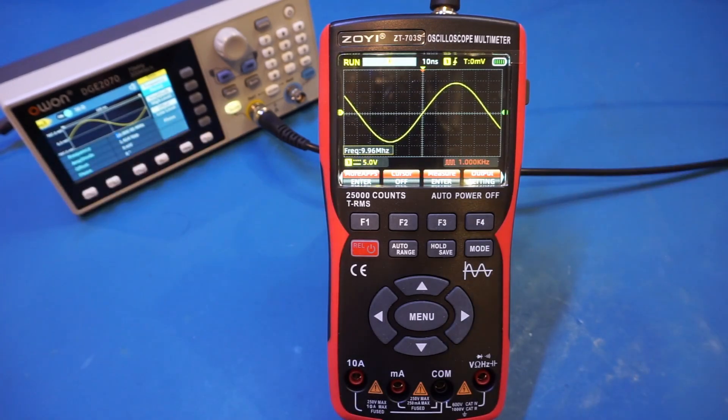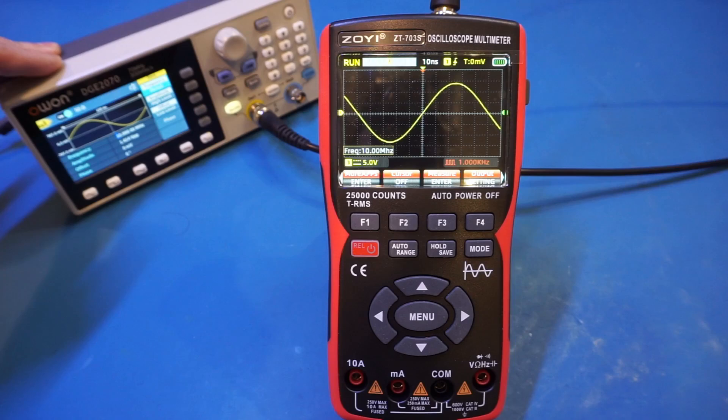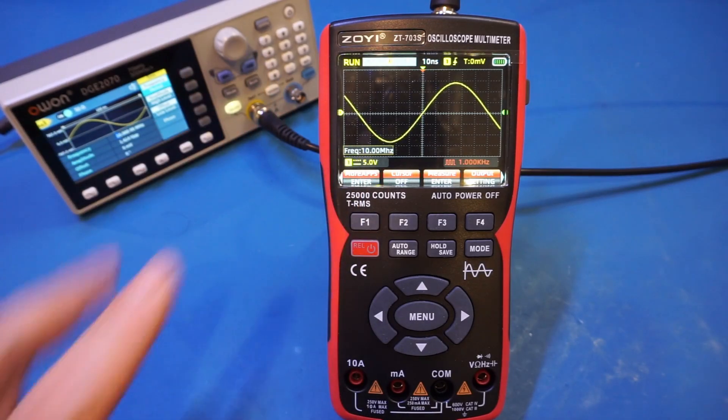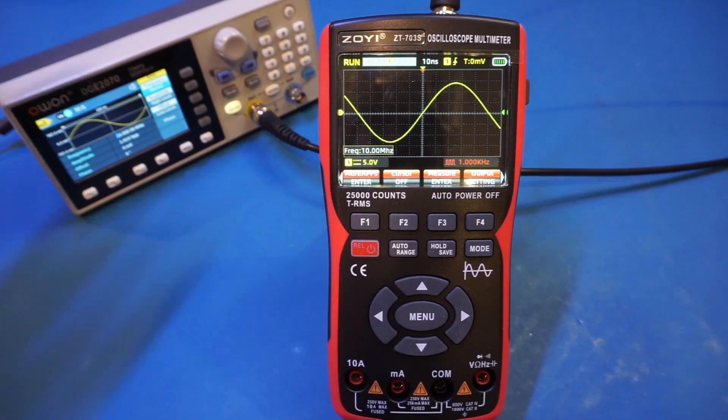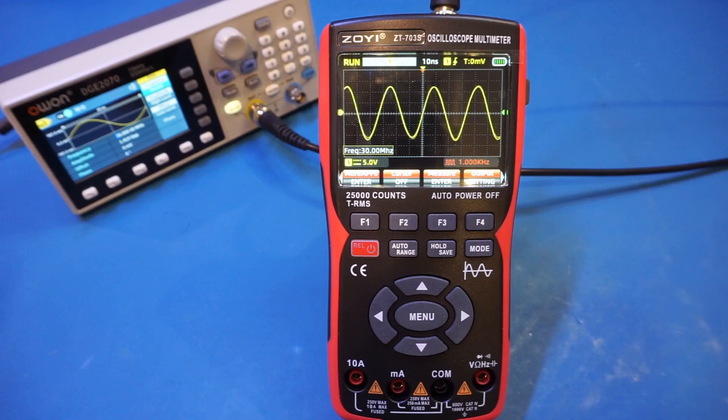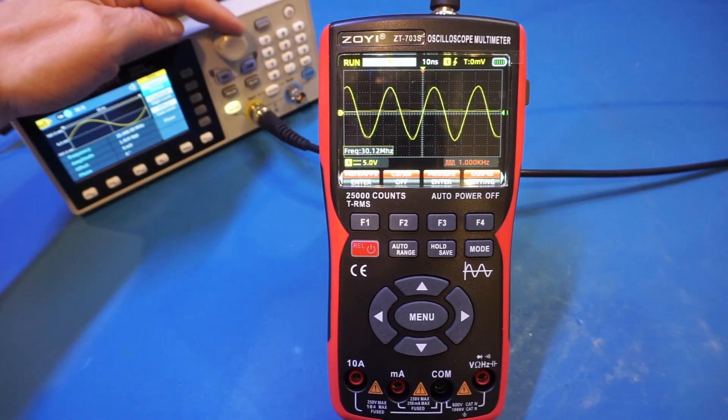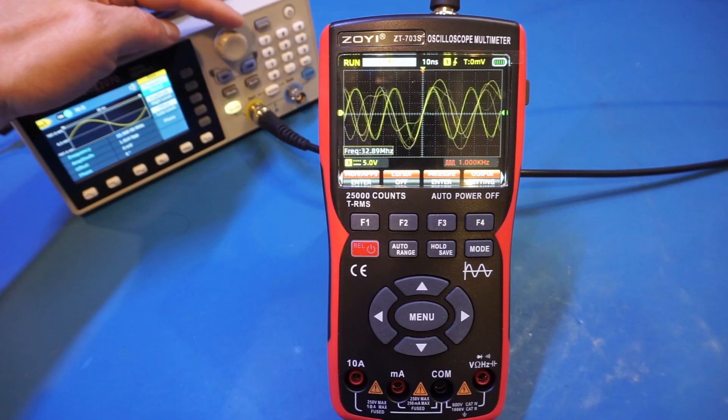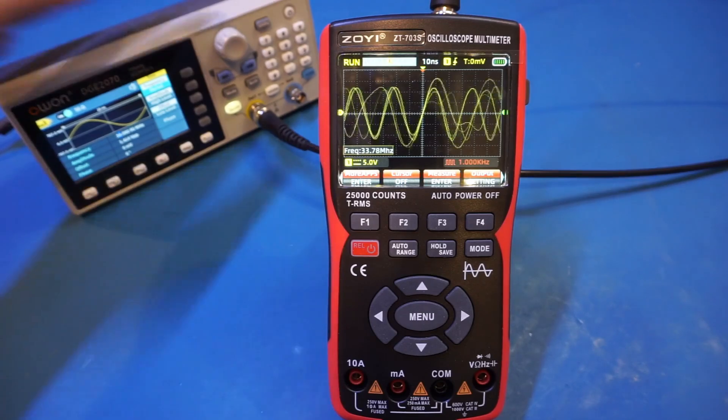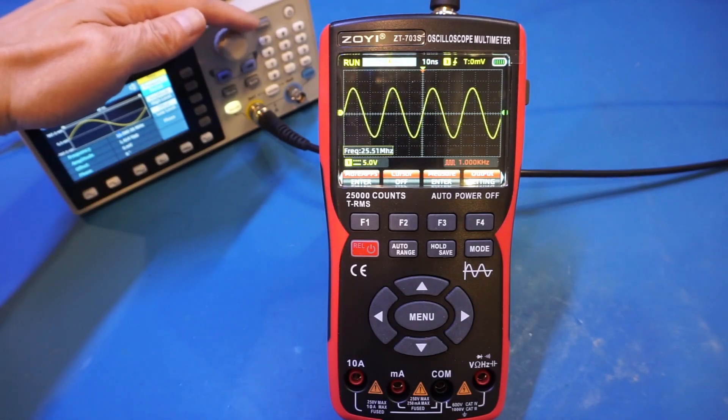Right now I'm having a 10 MHz signal outputting from my DG2070, and you can see the signal is displayed on the screen. If I increase the frequency to 30 MHz, you see no problem. Now I'm going to increase it further—31, 32, 33, and as soon as I go to 34, you can see that the captured waveform becomes unstable. That was the issue I saw earlier.